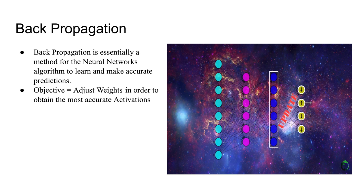Now let's go into backpropagation. Backpropagation is the way the neural network learns and accurately makes a prediction. The objective is to adjust the weights in order to obtain the most accurate activations, which will eventually result in the most accurate prediction. For example, you can have a bad neural network with maybe 60–70% accuracy, which is unfavorable. On the other hand, you can have a very accurate neural network with over 99% accuracy. The more accurate you are, the better the neural network is. So backpropagation is a way to increase accuracy by adjusting the weights.